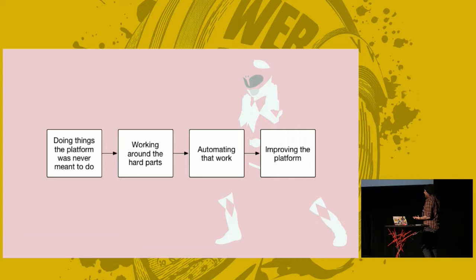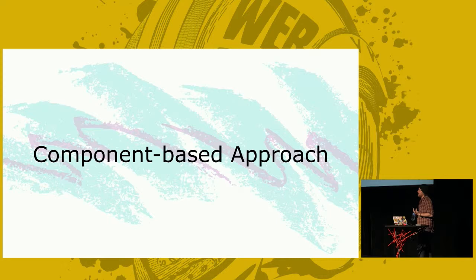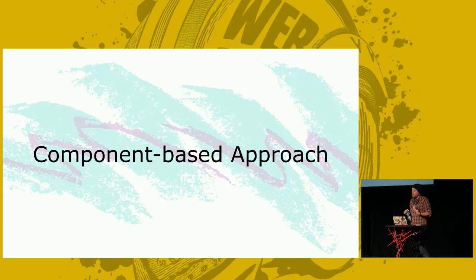We have this new way of building applications where we break everything into small, isolated components. We can pass in everything they need — here is the state of the world to the application, and this is the UI that should be rendered as a result. This has changed the way we build websites, but it's had us butt heads with an old friend — which brings to the refrain that CSS is broken.